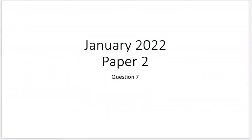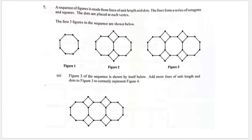Welcome back to another video. Today we are working on January 2022 Paper Two, Question Seven, which is a rather fun topic — sequences — which comes under Section One of our syllabus. A sequence of figures is made from lines of unit length and dots; the lines form a series of octagons and squares, with dots placed at each vertex. The first three figures in the sequence are shown.